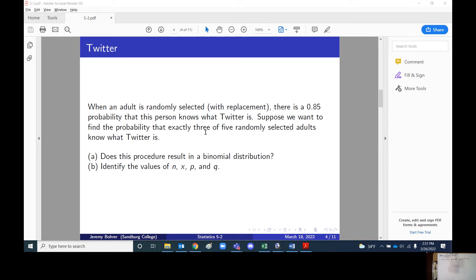There are a fixed number of trials. That's five. We're looking for five randomly selected adults.